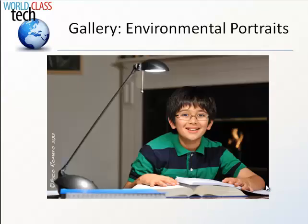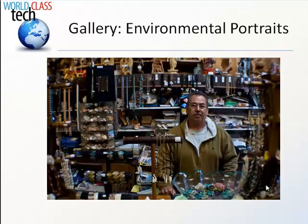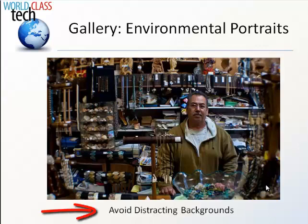Here's another environmental portrait — a young man at study. I want to point out the use of props: we've got a book, a lamp, things like that. It shows the context, which is studying and doing homework. Props are an important part. However, we have a lot of props in this picture, and this isn't necessarily the best example of an environmental portrait. I used this one to show you how props and background can get out of hand. You want to avoid overly distracting backgrounds because they pull away from the subject, which is your person.